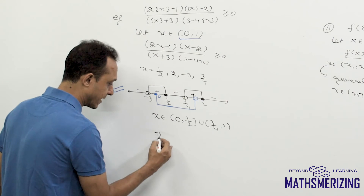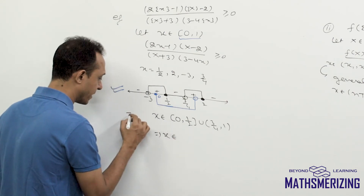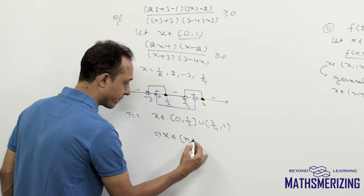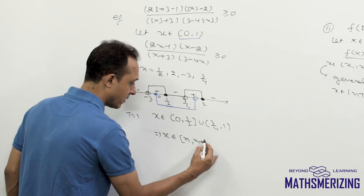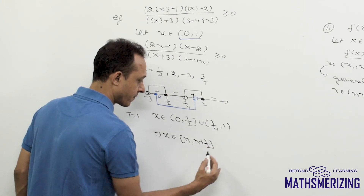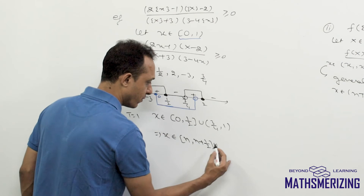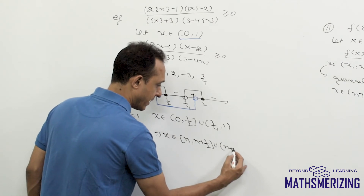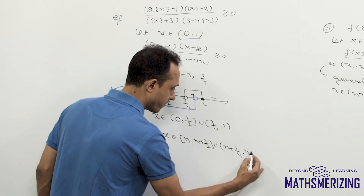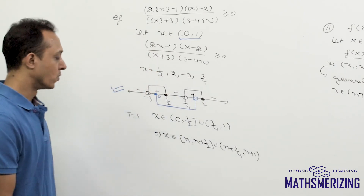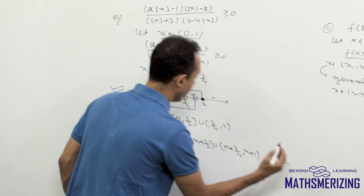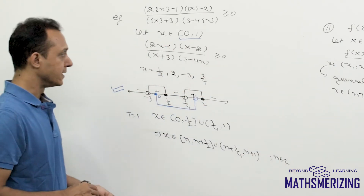Now I need to generalize it. The fundamental period is 1, so the generalized answer is: x ∈ [n, n + 1/2] ∪ (n + 3/4, n + 1], where n belongs to the integers.